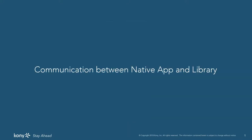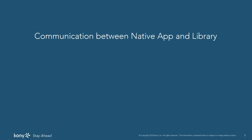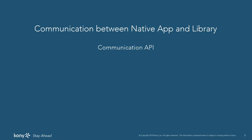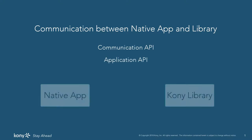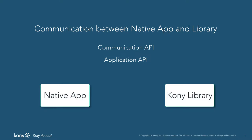Along with embedding the native library, you can also establish communication between the native app and the generated libraries using communication APIs and some application APIs of Visualizer. With these, you can send information to the native library from the native app before the native library is launched, and you can also send information from the native library to the native app before the native library exits.